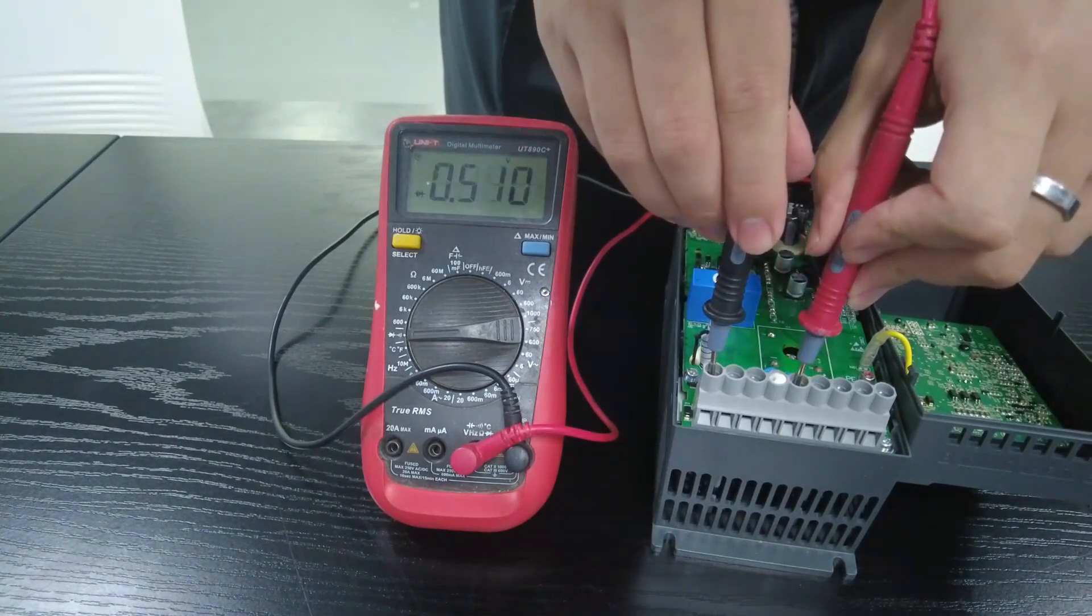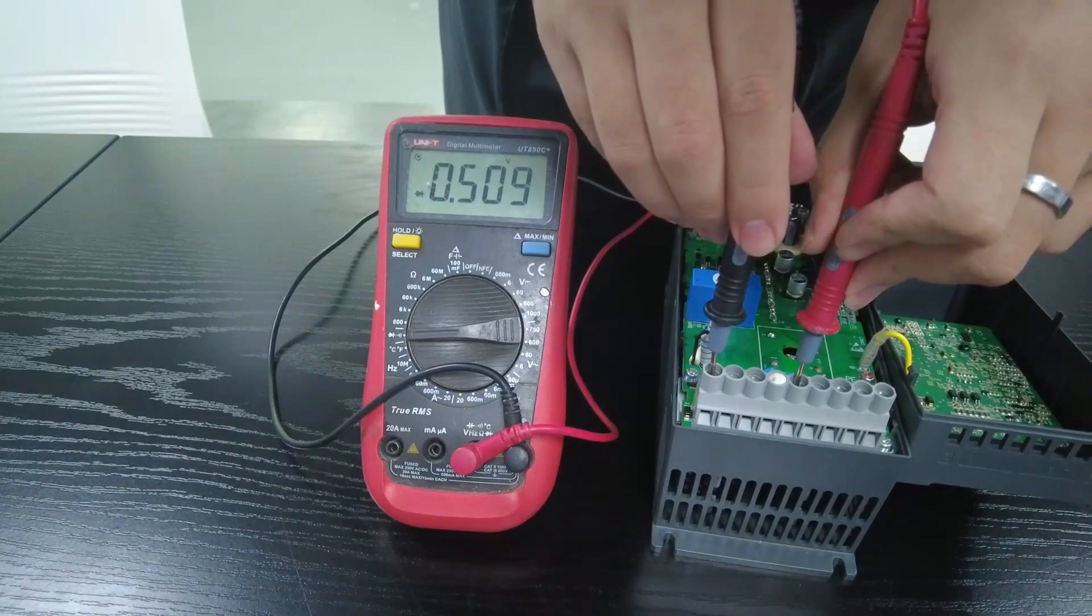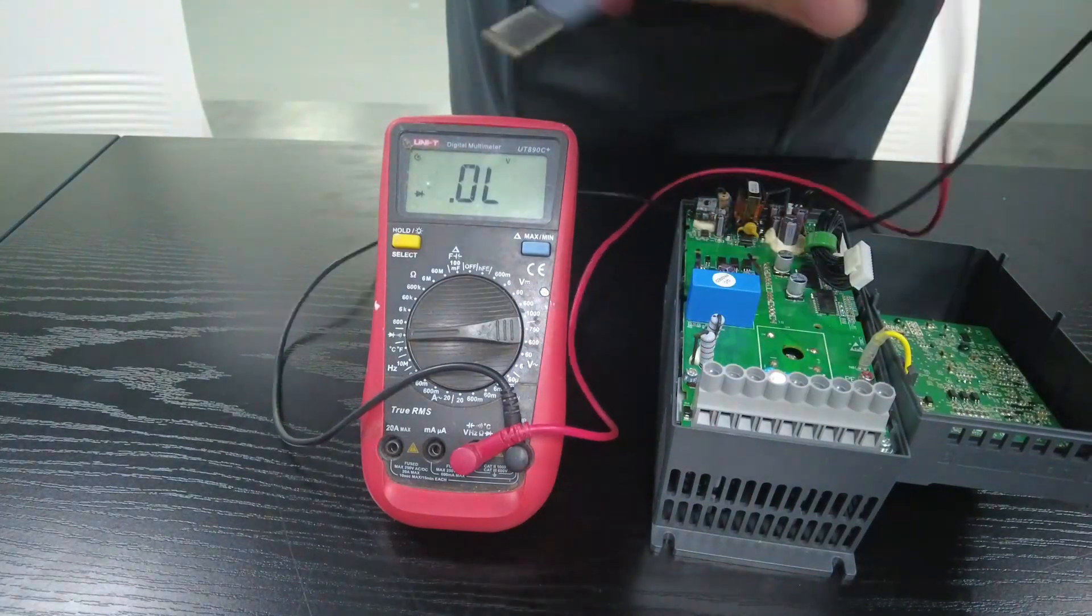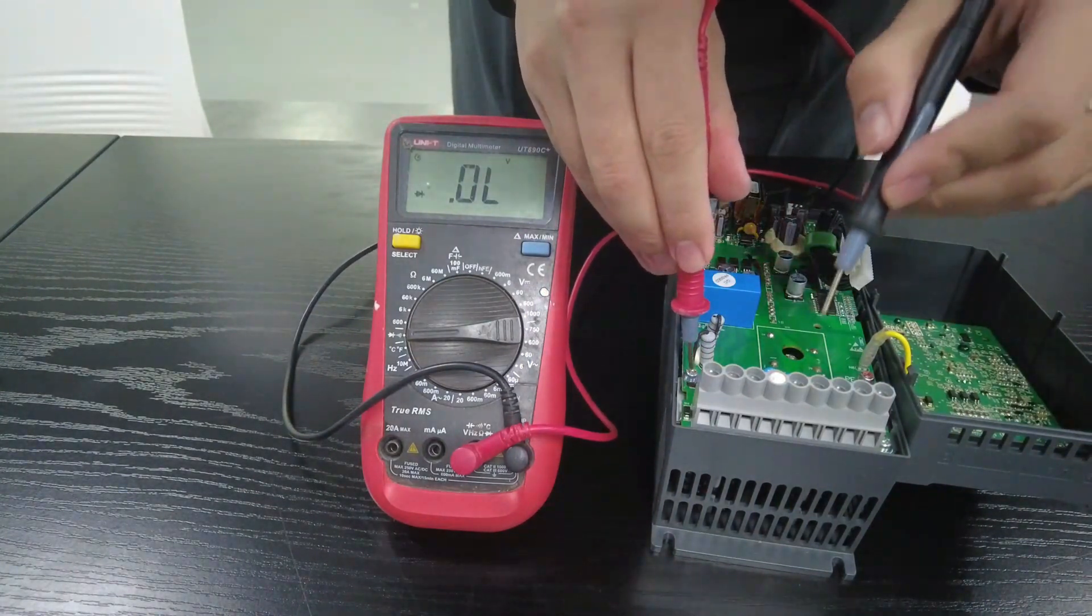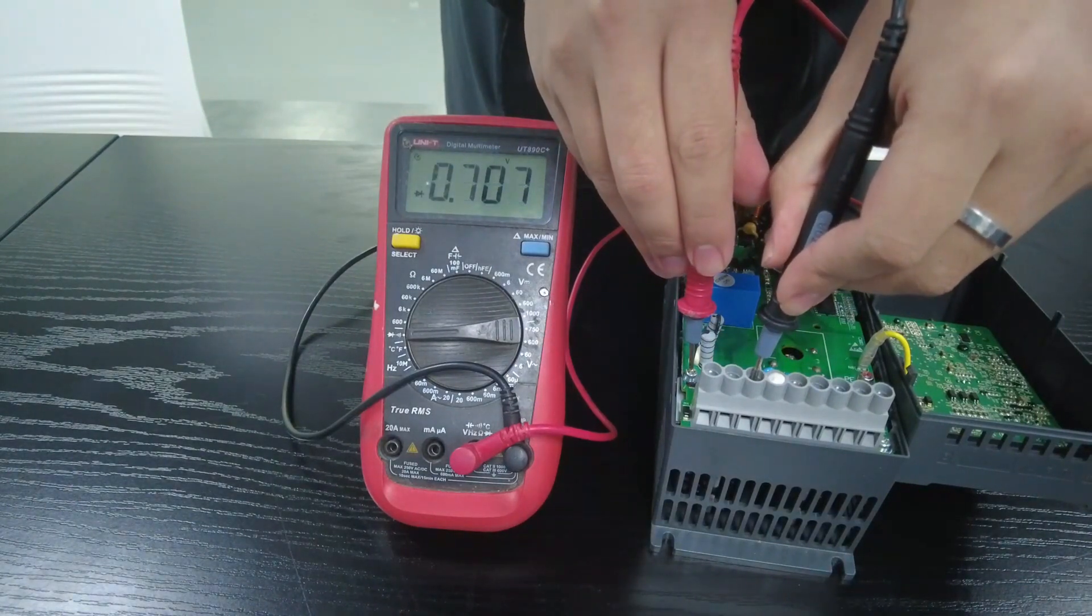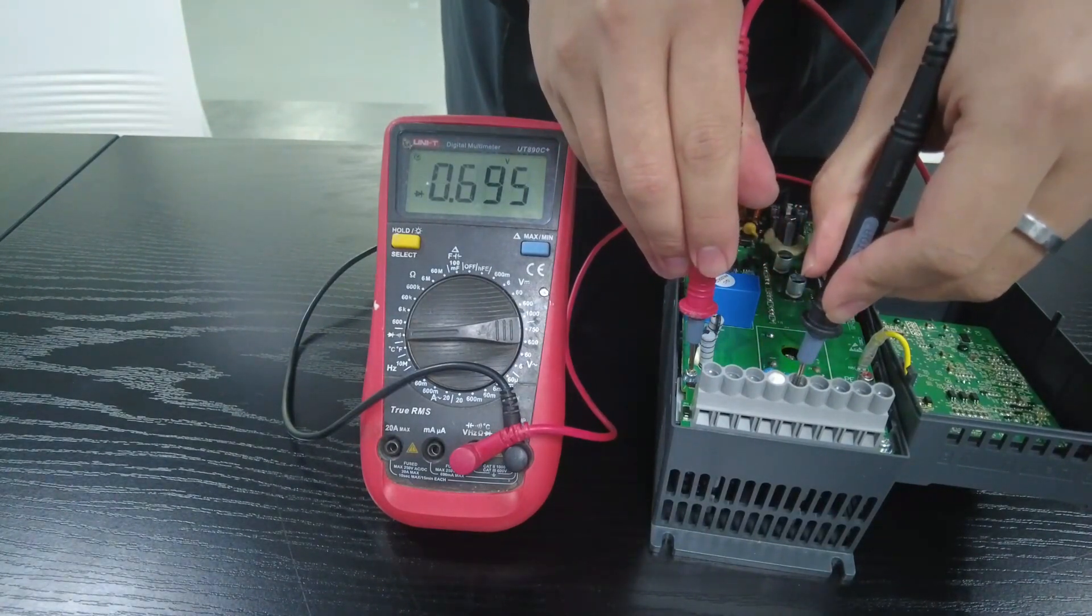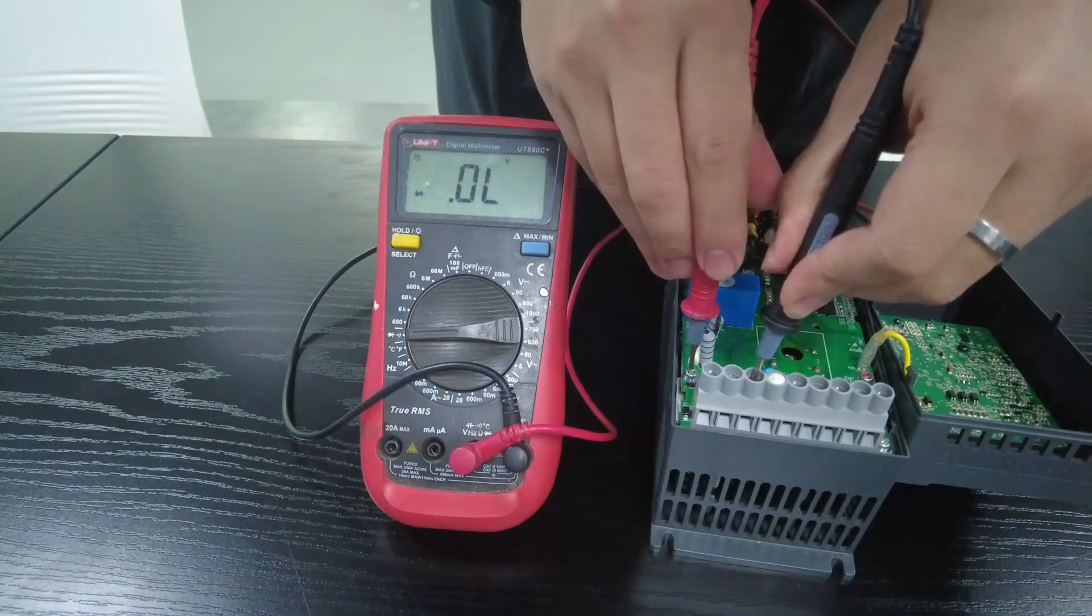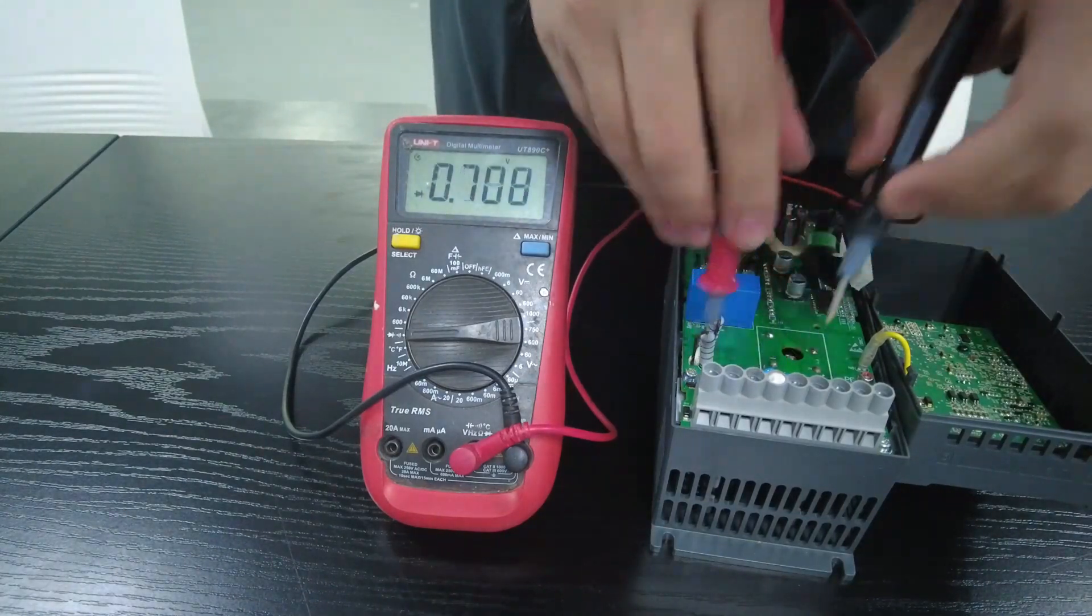Then connect the red test lead to the negative terminal and then use the black test lead to test the three terminals R, S, and T. This is normal if the measured values are all around 0.5. If the measurement values are all the same, it is normal.